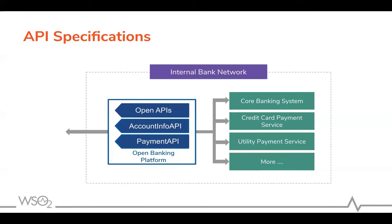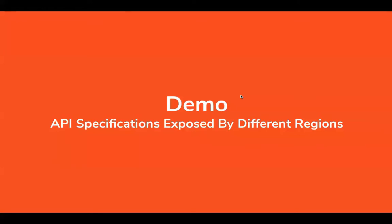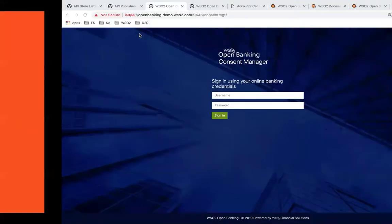For example, if the bank wants to expose ATM locations, we can define those as an open API and allow anyone to access that information. But if we want to expose the account information of a customer or provide a payment service, then we definitely need to expose that API as a secure API.